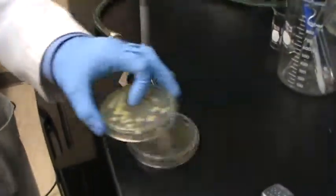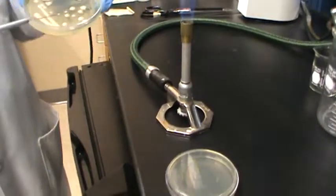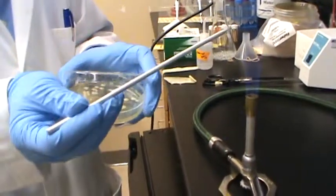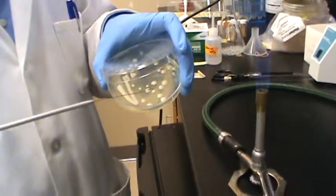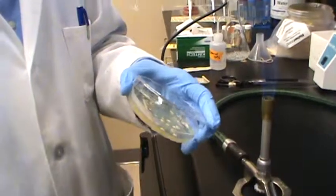Before we do that, we want to make sure the loop is actually cool. Touch the side of the plate to make sure it's cool. Then take one single colony, let's say this one. That's actually a lot of cells.